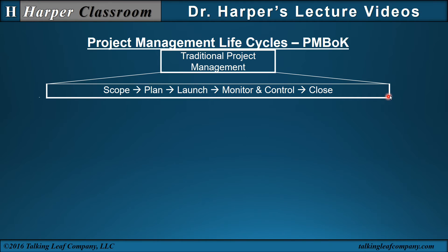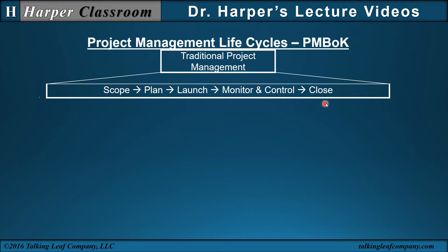Next, we have the project management life cycles. A traditional project management from PMBOK includes scope, plan, launch, monitor, control, and close. Scope is what you're doing. Plan is how you're doing it. Launching is doing it. Monitoring and controlling is keeping on track. And closing is stopping it.